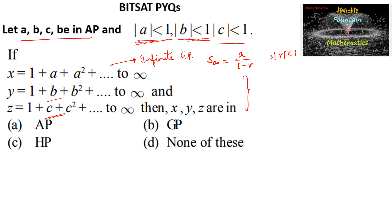We can write x equals 1 upon 1 minus a, y equals 1 upon 1 minus b, and z equals 1 upon 1 minus c. Since the first term is 1 and common ratio is a, similarly first term is 1 and common ratio is b in the second, similarly the third.